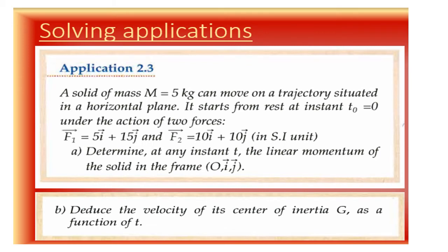Let us solve Application 2.3 from your book. A solid of mass M equals 5 kg can move on a trajectory situated in a horizontal plane. It starts from rest, that is V0 equals 0, under the action of two forces: F1 equals 5i plus 15j and F2 equals 10i plus 10j in SI units. Part A: determine at any instant t the linear momentum of the solid in the frame Oij. In part A, we are asked to determine P of the system.